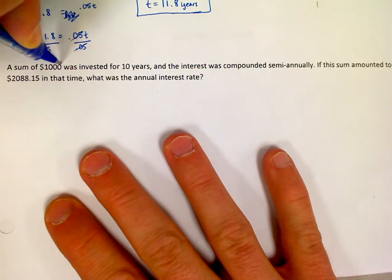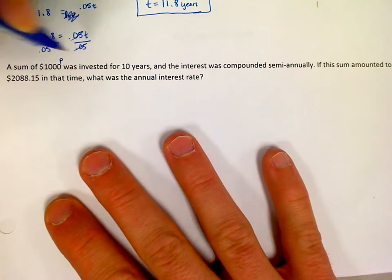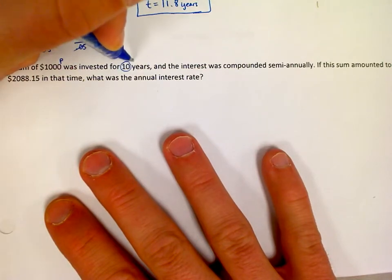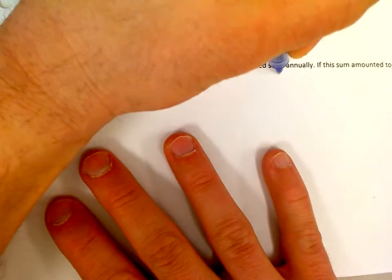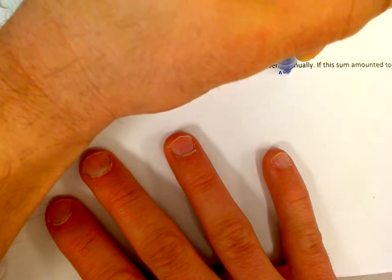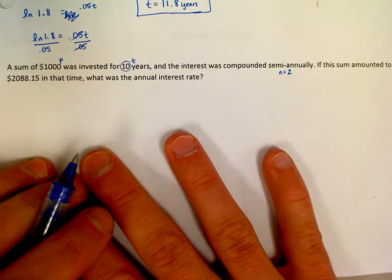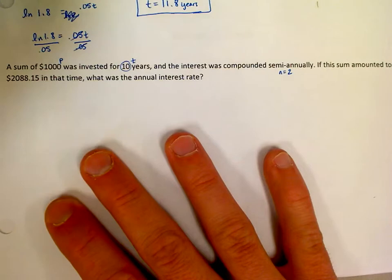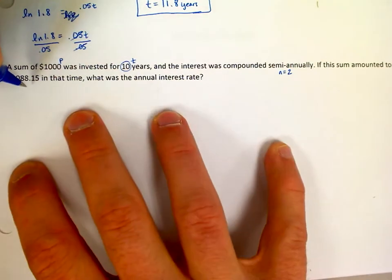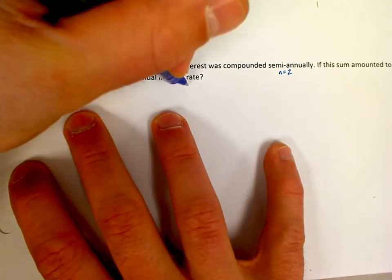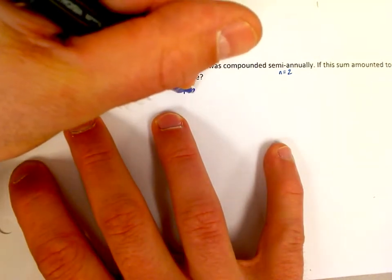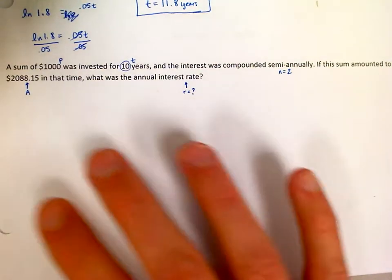So here we go. A sum of $1,000, that's your principal, was invested for 10 years, so we are given the time. The interest was compounded semi-annually, which means that it's going to happen twice a year, so the N in our formula is going to be 2. If this sum amounted to $2,088.15, so if that's my final amount A, then what is the interest rate? That means we're solving for R in our formula, that's the question.